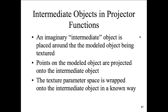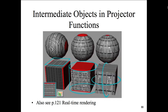Texture coordinates can be computed automatically during rendering using intermediate objects — spherical, cylindrical, or planar mapping — depending on the type chosen. Or the projector function can be pre-calculated, with results stored per vertex. The intermediate object is an imaginary object placed over the modeled object being textured — like wrapping something. Points on the model are projected onto the intermediate object, and then the texture parameter space is wrapped onto it in a known way. Think of gift wrapping: we're taking an image and wrapping it around the object; the calculation determines which parts fill in and in which order.